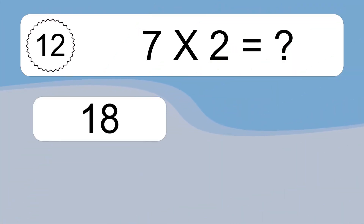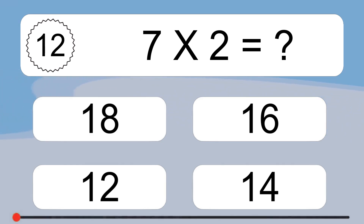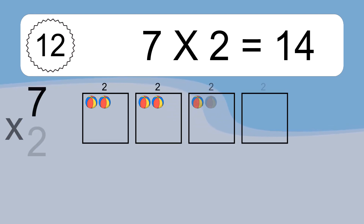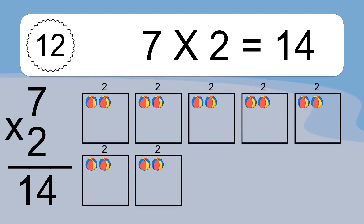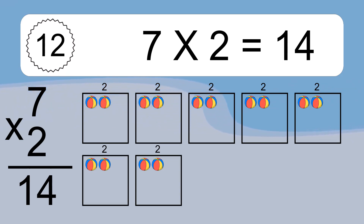7 times 2 equals what? 7 times 2 equals 14. We have 7 boxes and each box has 2 colorful balls inside. If you count all the balls in all the boxes together, you will have 7 times 2 balls. This equals 14 balls.